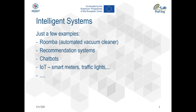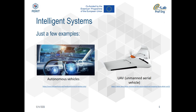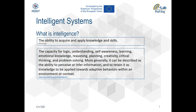Some examples of intelligent systems include Roomba, the automated vacuum cleaner, recommendation systems, chatbots, Internet of Things devices such as smart meters and traffic lights. More complex intelligent systems include autonomous vehicles and UAVs. With respect to these more complex systems, there is still a lot of work to be done to achieve full autonomous activities. Not only do we have technical complications, but also ethical issues such as who is to blame if such a system makes a wrong decision causing damage to property or loss of life.